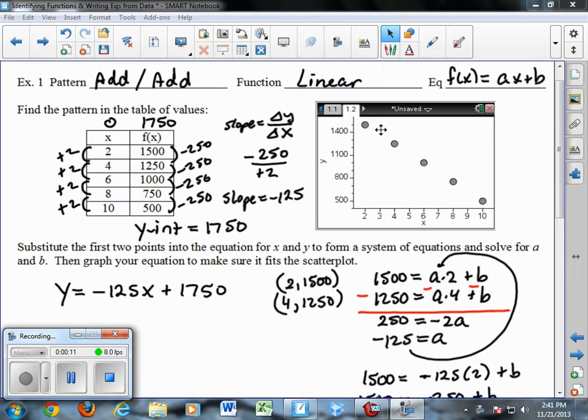Our first function is clearly a linear function, as you can see by the scatter plot. The pattern you'll notice in any linear function is called an add-add pattern. As you go up by the same amount in the x column, you're also going to be either going up or down by the same amount each time in the y column.